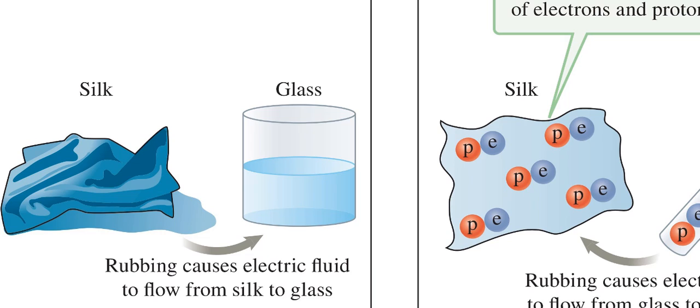There was no way for Franklin to know whether that was true, because there was no experimental evidence to determine which way the electric fluid flowed. Franklin could also have imagined that electric fluid was transferred from the glass to the silk. However, subsequent scientists have kept his arbitrary choice.